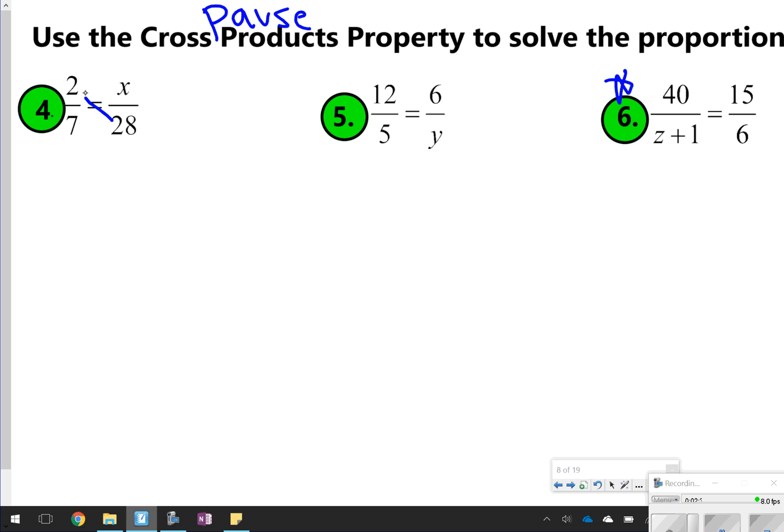Okay, so here we go. 2, we've got 2 times 28 and 7 times x. 7 times x is 7x, and 2 times 28 is 56. Divide both sides by 7. x is equal to 8.